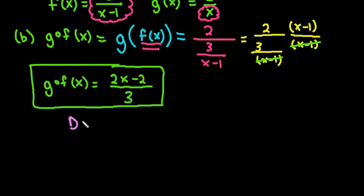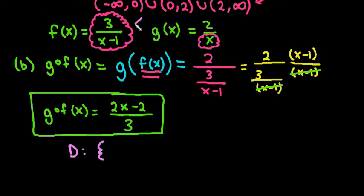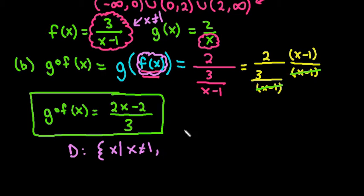As far as the domain goes, I'll write this in set notation. Since we plugged in f(x), we find the domain of f(x): x cannot equal 1. For the answer (2x − 2)/3, there are no restrictions because x is not in the denominator. So the domain is simply x ≠ 1.